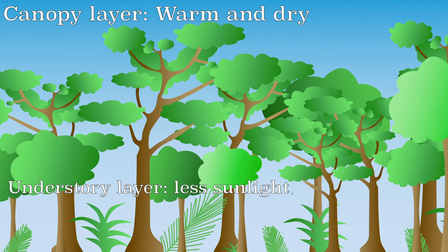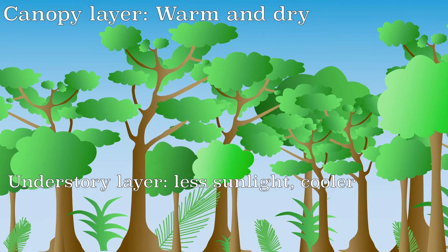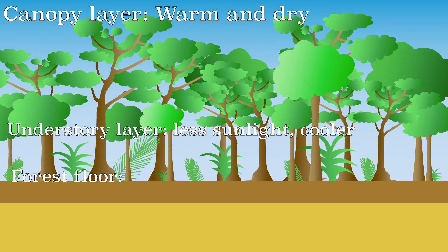In the understory layer there is less sunlight, because this is already blocked at the canopy layer. This makes the differences between day and night smaller. Here too, a lot of water evaporates. This costs a lot of energy and therefore heat, so it can cool down a bit more in the understory layer.